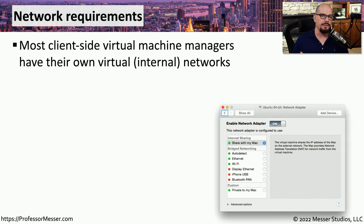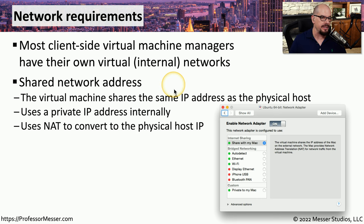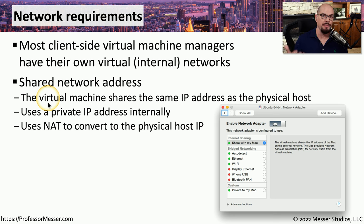There are many different ways to configure the networking used between VMs running on a system. Every virtual machine has its own network configuration, and you on the hypervisor can determine how that virtual machine is able to communicate. One configuration is a shared network address, where the virtual machine has exactly the same IP address as the physical host. The VM uses a private IP address and network address translation to communicate using the IP address of the hypervisor.